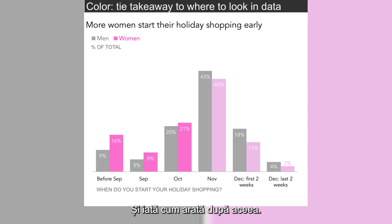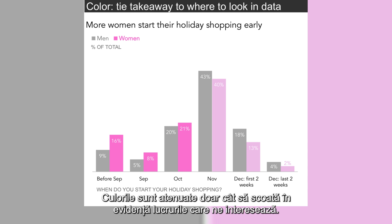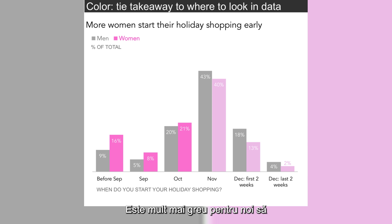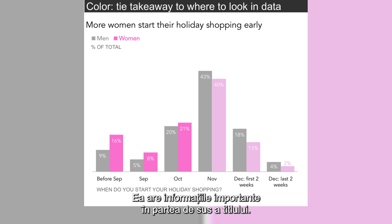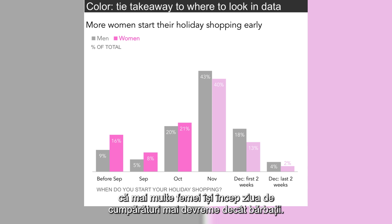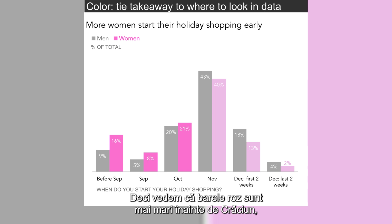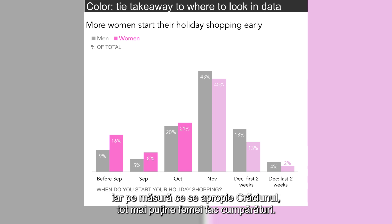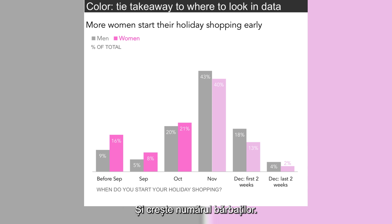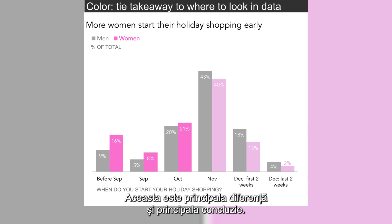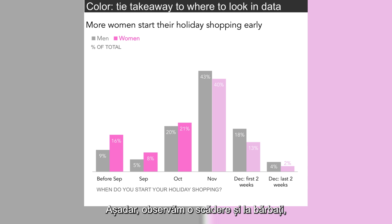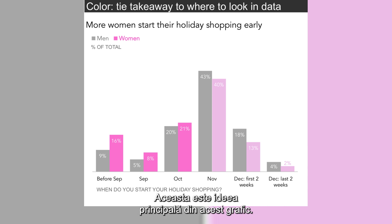Here's how it looks afterwards: the y-axis is removed because the percentages are already shown as data labels directly on the bars. The colors are toned down to highlight only what's important. There's no 3D — avoiding 3D is a good basic practice since it makes comparisons harder. Most importantly, the key insight is placed in the title: more women started holiday shopping early versus men. You can see the pink bars are higher before Christmas, and as you get closer to Christmas, fewer women are still shopping.